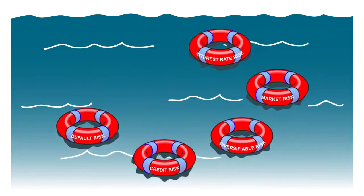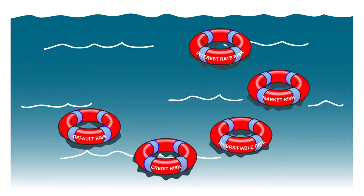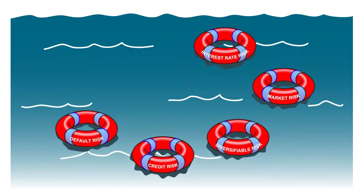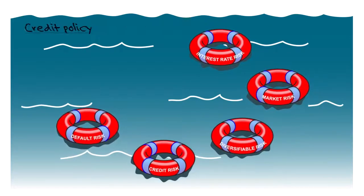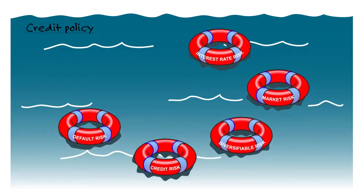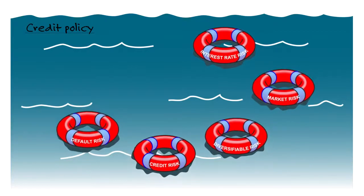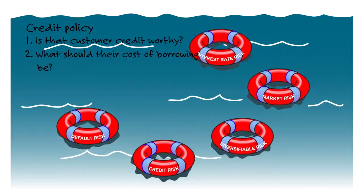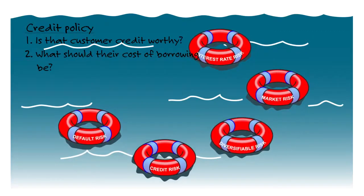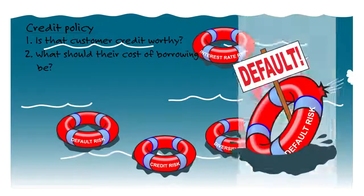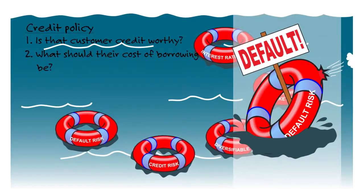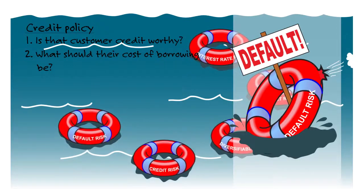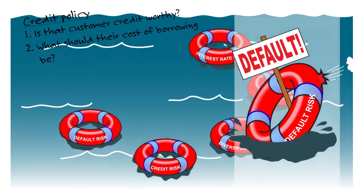Default risk — if you want to extend credit to a customer, what's their probability that they're going to default and not make those payments when they become due? So when you determine your credit policy, your default risk is really what you're looking at. If you're going to extend credit to a customer and you want to determine whether that customer is credit worthy and what their cost of borrowing should be, a lot of that is based upon assessing their default risk. So we look at that risk of distress — their current ratio, working capital, quick ratio, cash conversion cycle — and whether that customer is making enough cash to pay you the money they owe you on time.